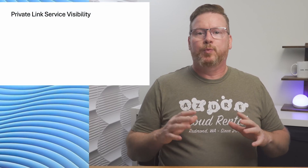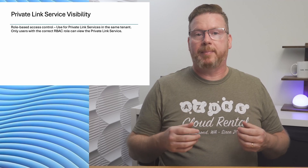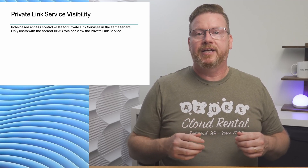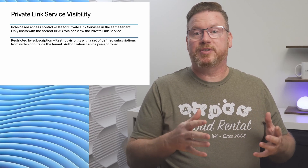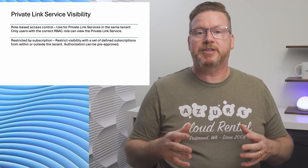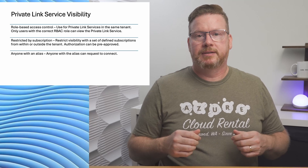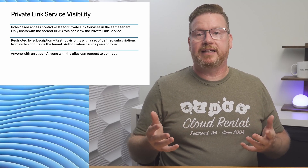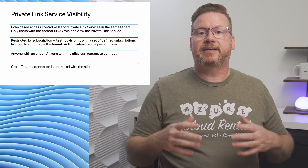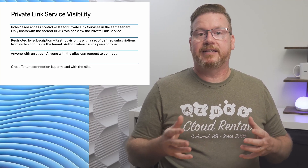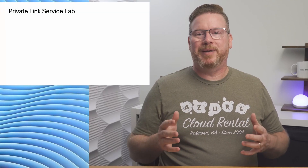Next, let's go over Private Link Service visibility. With this, we can limit who can see the Private Link Service. The first option is with RBAC roles — only available inside a tenant. We can also restrict by known subscriptions, setting a predefined list of subscriptions from within or outside our tenant, and pre-approve these subscriptions. Finally, we can let anyone with the alias request a connection — the connection needs to be approved before it's connected.